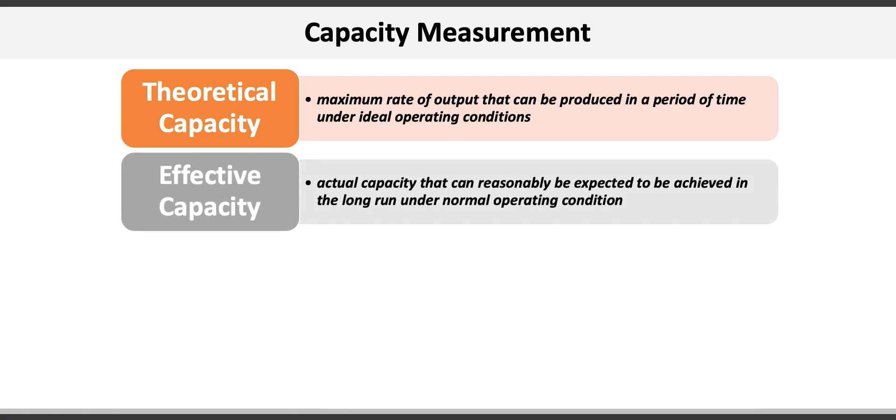Next is effective capacity. This is actual capacity that can reasonably be expected to be achieved in the long run under normal operating conditions. For example, we actually operate our factory 12 hours per day, 6 days a week, and we can produce 90,000 widgets per week.